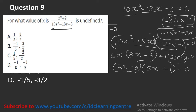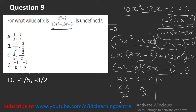Solving each bracket: 2x minus 3 equals 0 gives 2x equals 3, so x equals 3 over 2. For 5x plus 1 equals 0: 5x equals minus 1, so x equals minus 1 over 5. So we have x equals 3 over 2 and x equals minus 1 over 5.